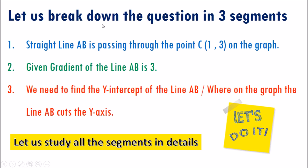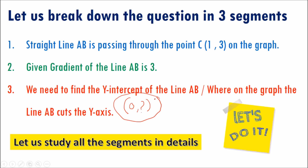Let us break down the question into 3 segments so that it is easier to understand. The first segment is: straight line AB is passing through the point C where x is 1 and y is 3. Second segment: the given gradient of line AB is 3. Third segment: find out the y-intercept of line AB, meaning where on the graph the line AB cuts the y-axis. Y-intercept also means the value of y when x is 0.